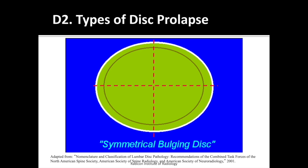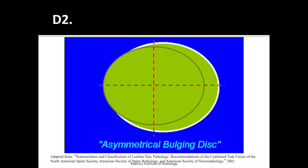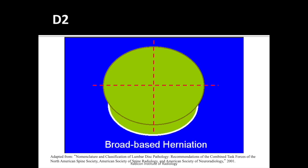When the disc bulge is present circumferentially along 360 degrees of the disc margin, it is called a symmetrical disc bulge. An asymmetrical bulging of the disc margin covers between 50 to 100% of the disc circumference, or between 180 to 360 degrees. It is seen in cases of severe scoliosis and is again not considered a form of disc herniation.